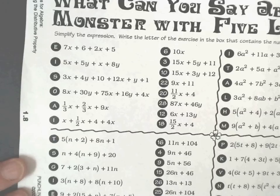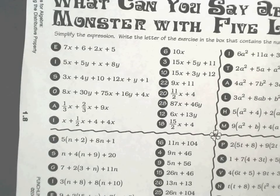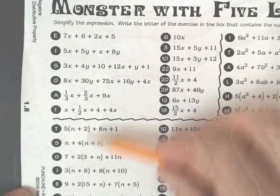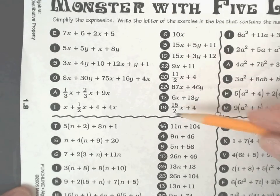All right, here we have a paper on combining like terms and distribution mixed with combining like terms. It looks like a lot of work, but don't worry, it's just two columns of work with their answers next to it.